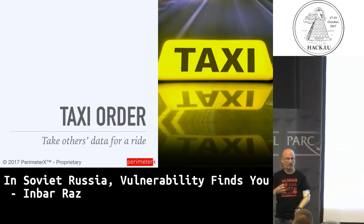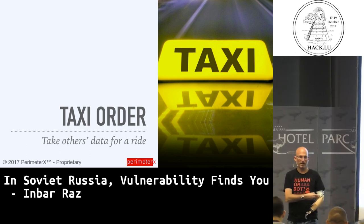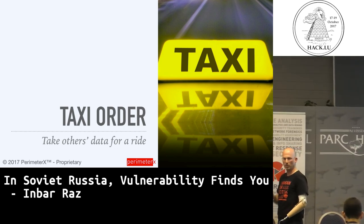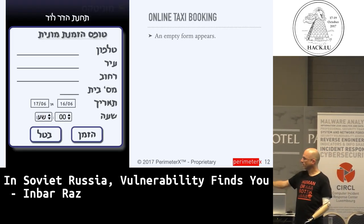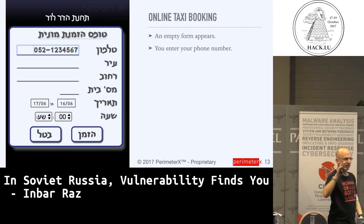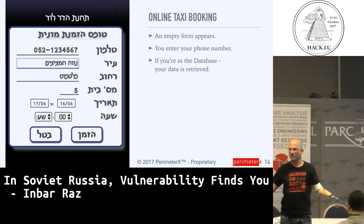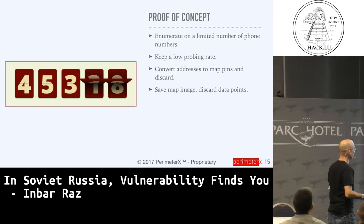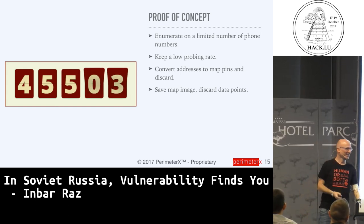Taxi order. We all travel a lot — we call it the security vacation club. I go to the airport, get a cab. There's a very famous vendor in Israel with an online reservation system — you go in and reserve a taxi. It's very convenient. You get this dialog, put in your phone number and address. But if you've made an order in the past, putting in your phone number automatically retrieves your address. And there's no authentication of any sort. So you enumerate on phone numbers and try to get data.